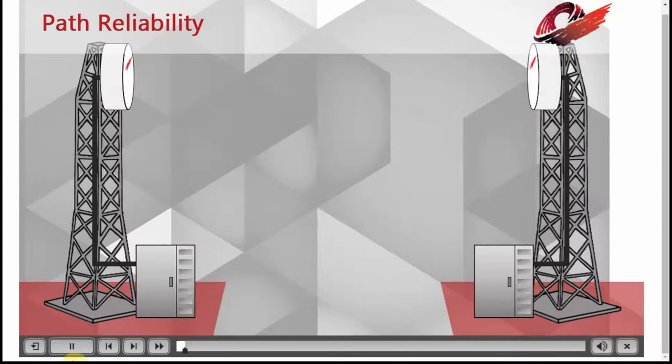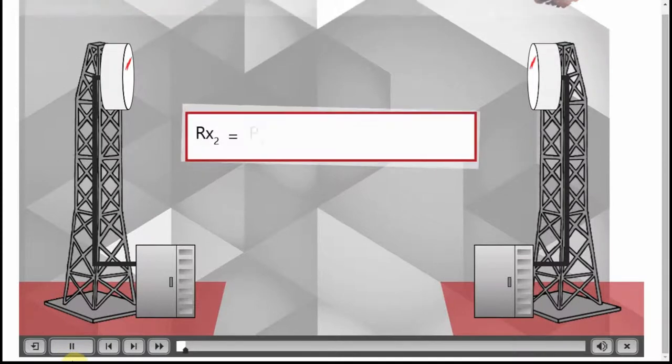To achieve path reliability that meets our design objective, we need to assess all the elements of the link budget and find ways to improve and adjust particular elements when necessary.